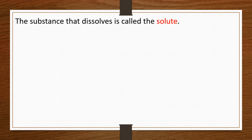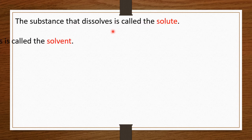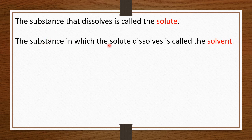Hello students, welcome back again. This is Part 2 of Chapter 4 — Solids, Liquids and Gases. So the remaining contents we have to understand now. First of all, what is a solute? The substance that dissolves is called the solute. For example, salt — the substance that dissolves is called the solute.